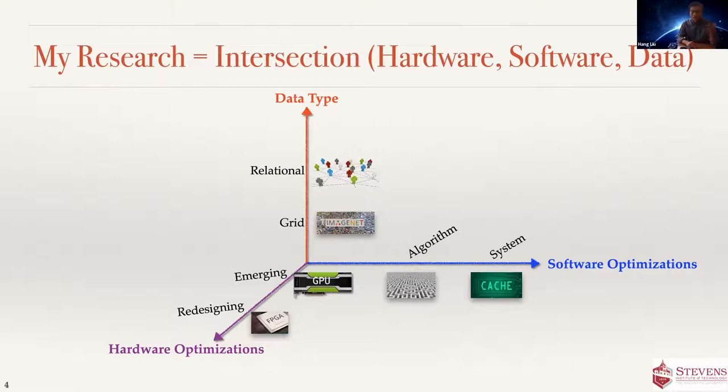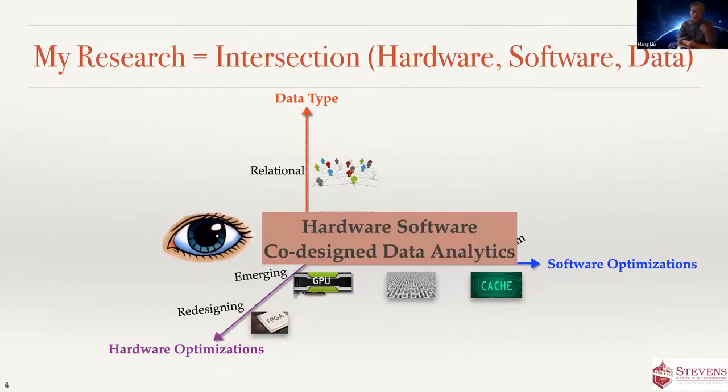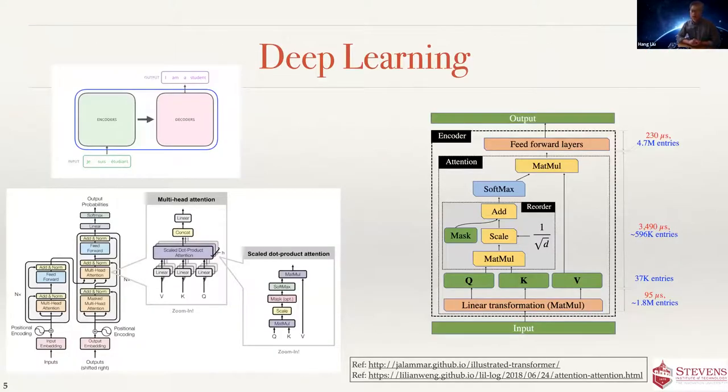Then I'm going to really cover three interesting topics of how we do hardware, software co-design for data analytics. The first project is deep learning. Everybody has to talk about deep learning, so I'm also talking about that, but I want to show you something pretty interesting here. On the top left side, we see a language translator. You have the input, I think it's French, and then output is English - I am a student. You input this and output that. Or you can do real-time audio transcripting.